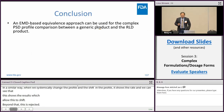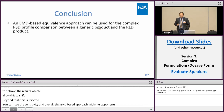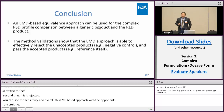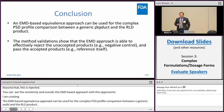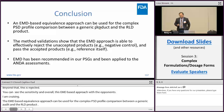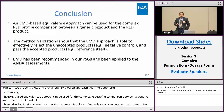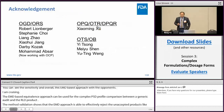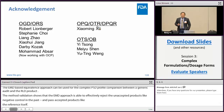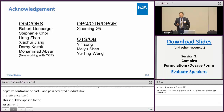In conclusion, the EMD-based equivalence approach can be used for complex PSD profile comparison between a generic product and an RLD product. The method validation shows the EMD approach is able to effectively reject unacceptable products like the negative control, and pass acceptable products such as the reference itself. Finally, EMD has been recommended in our product-specific guidance and has been applied to the equivalence assessment. I want to thank my colleagues from OCD/ORS, OPQ, OTR, DPQR, and OTS/OB. Thank you.